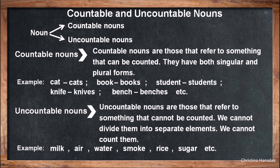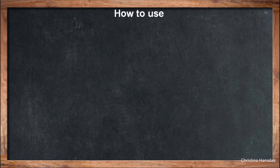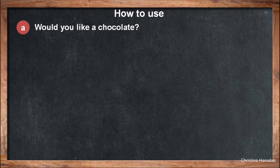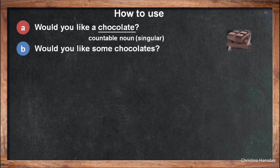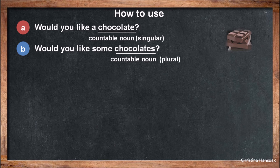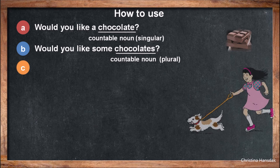After knowing about countable and uncountable nouns, let's learn how to use them in sentences. (a) 'Would you like a chocolate?' — here 'chocolate' is a countable noun, singular. (b) 'Would you like some chocolates?' — here 'chocolates' is a countable noun, plural.